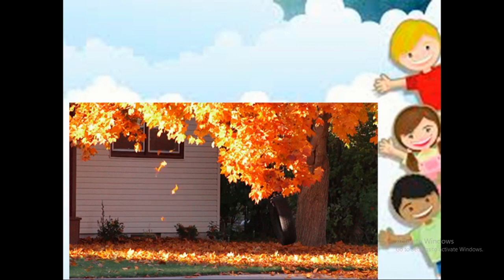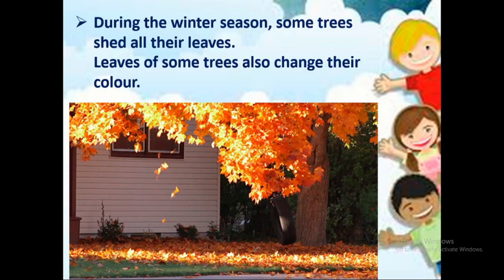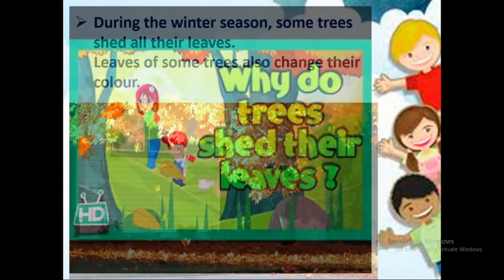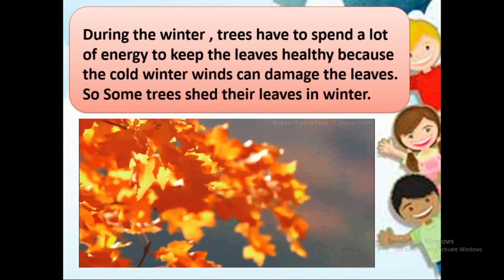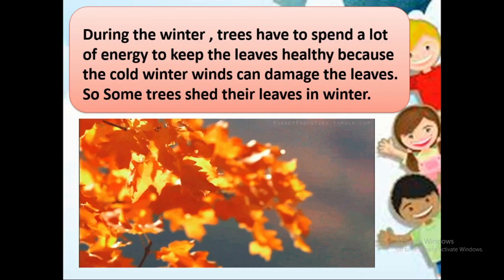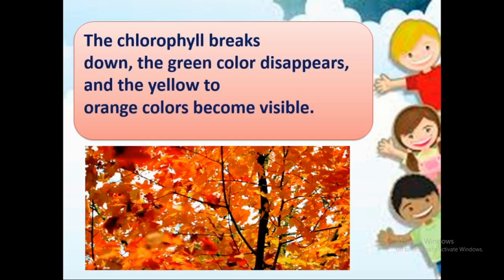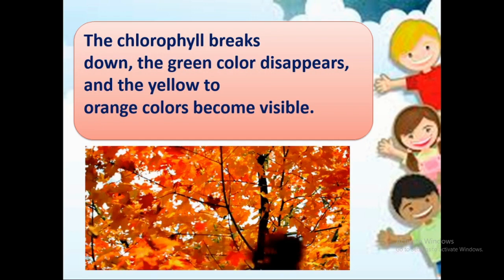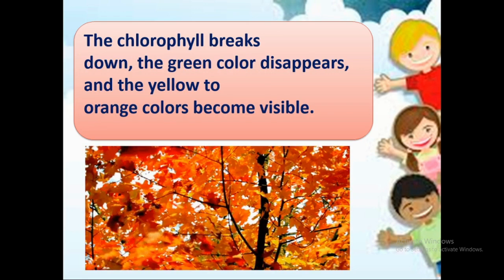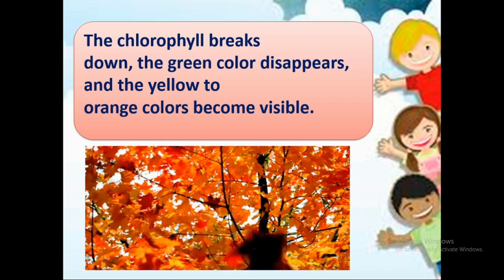After learning the uses of leaves, we will see why some trees shed their leaves. During the winter season, some trees shed all their leaves. Some leaves also change color. During winter, trees have to spend a lot of energy to keep the leaves healthy, because cold winter winds can damage the leaves, so some trees shed them. Leaves change color from green to yellow and orange because the chlorophyll breaks down — the green color disappears and yellow to orange color becomes visible.